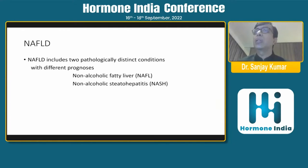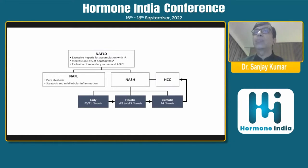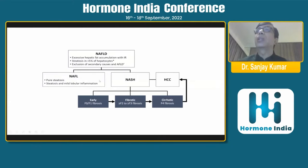NAFLD includes two pathologically distinct conditions. Non-alcoholic fatty liver shows pure steatosis with mild lobular inflammation, while non-alcoholic steatohepatitis (NASH) involves ballooning degeneration, severe inflammation, and early fibrosis. NASH can be classified as having early fibrosis (F1) or more advanced fibrosis (F2 or F3), both of which can progress to cirrhosis (F4). Importantly, NASH patients can directly develop HCC even without developing cirrhosis first.